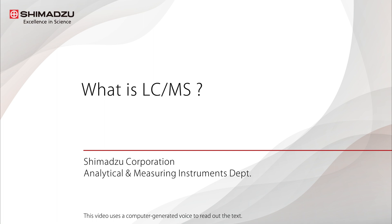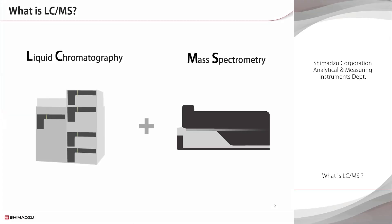What is LC-MS? This video is a brief introduction to the LC-MS analysis method. LC-MS is an analysis method that combines liquid chromatography, or LC, with mass spectrometry, or MS. For those familiar with LC, it might be easier to understand LC-MS as a method where the detector in the LC system is replaced by a mass spectrometer.